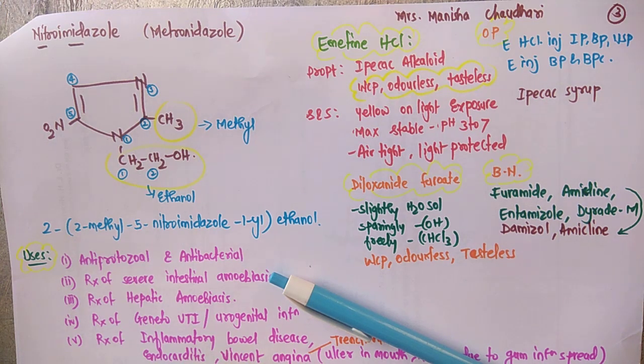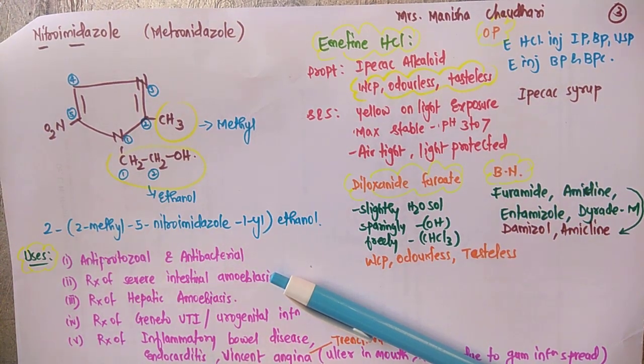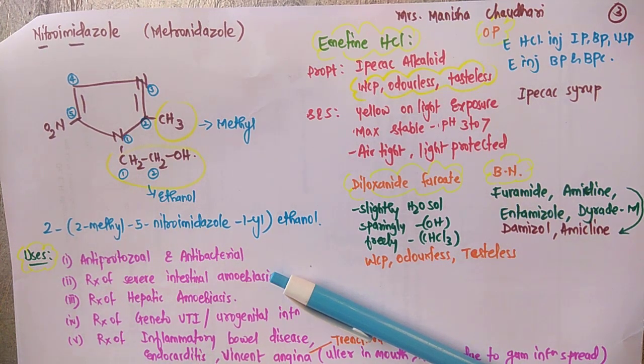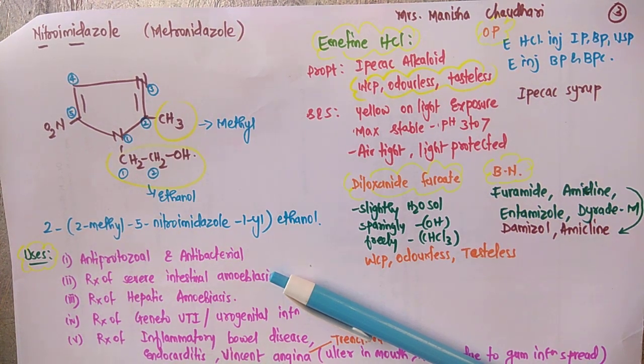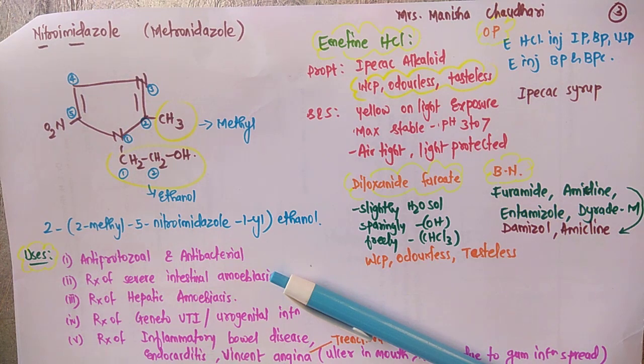Now we are going to cover some important drugs which we have covered earlier in the topic: nitroimidazole, which is metronidazole, then emetine, and diloxanide furoate. Properties and brand names you are supposed to cover because previous question papers have asked questions on these topics.